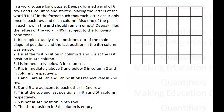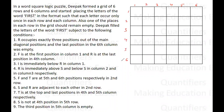Here is the grid. This is the first row, and the columns: first, second, third, fourth, fifth, and sixth. And the rows: first, second, third, fourth, fifth, and sixth.